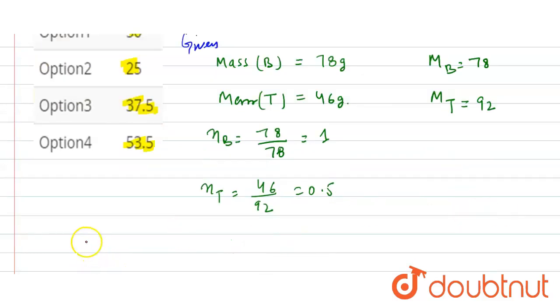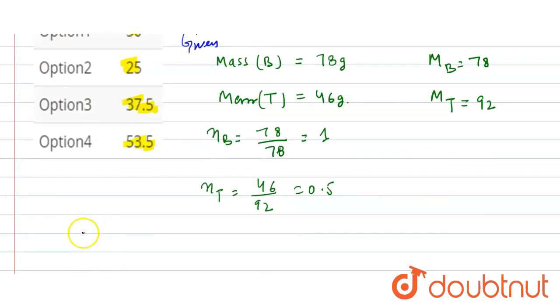So the formula to calculate the partial vapor pressure of benzene is: partial vapor pressure of benzene is equal to vapor pressure of benzene multiplied by...